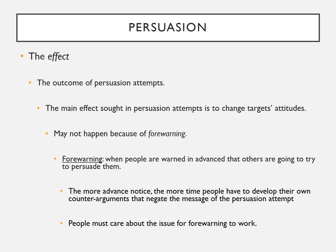Persuasion attempts may also fail to change targets' attitudes because of forewarning — when people are warned in advance that others are going to try to persuade them. Just telling people that someone is about to try to persuade them is a good defense against being persuaded, because the more advance notice someone has, the more time they have to develop counter-arguments. However, there is one qualification: people must care about and be involved with the issue at hand. If a person doesn't care about what soda he drinks, telling him about upcoming soda commercials won't work, because he won't bother developing counter-arguments.